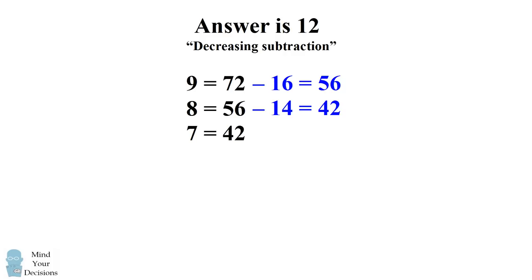We now subtract by 2 less. So we have 42 minus 12 which equals 30 and that gets us to the next line. We then subtract by 2 less again. So we have 30 minus 10 which equals 20. So we have 5 equals 20 and then we want to subtract by 2 less which will be 8. And that'll be 20 minus 8 which equals 12. And that's why they argue the answer is 3 equals 12.